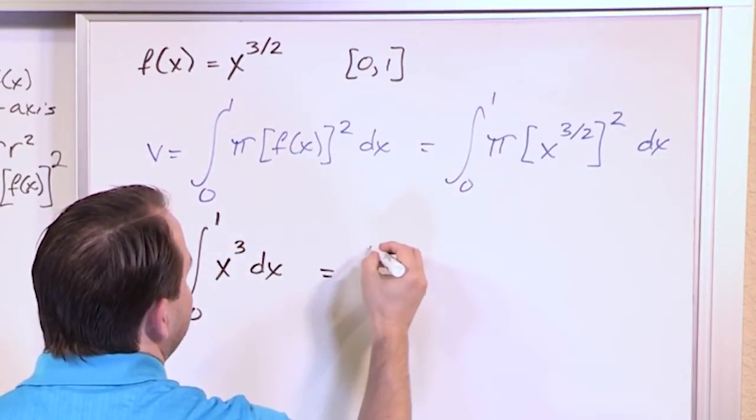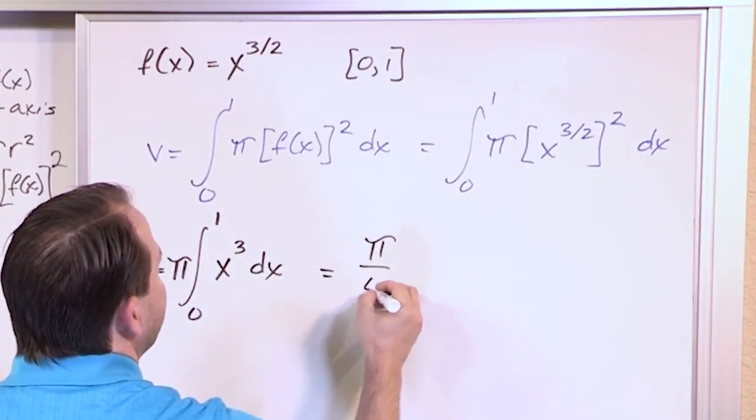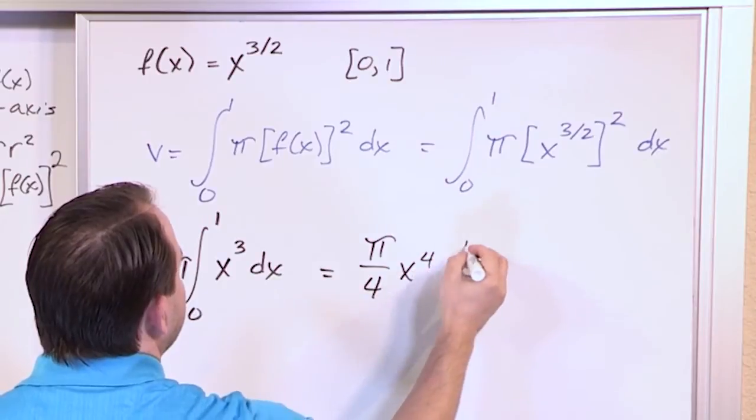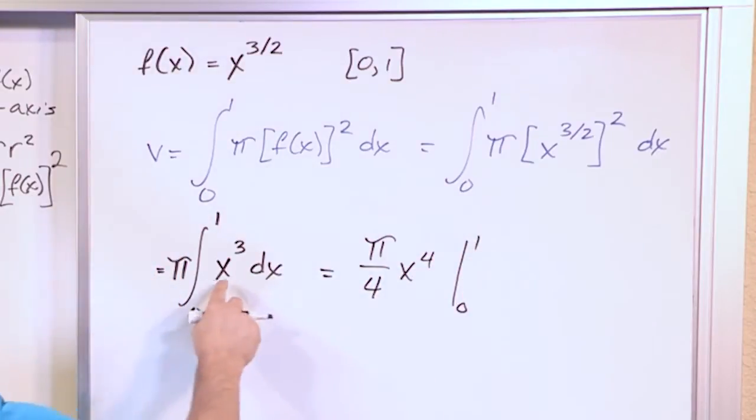And so what's going to happen is this will be pi over four x to the fourth power evaluated from zero to one. This is just a polynomial. We've done that a million times.